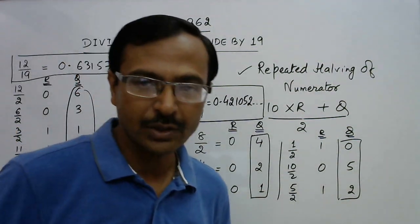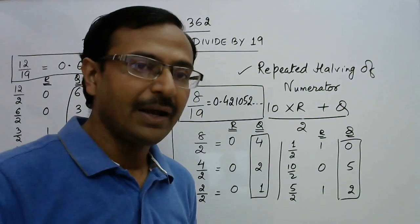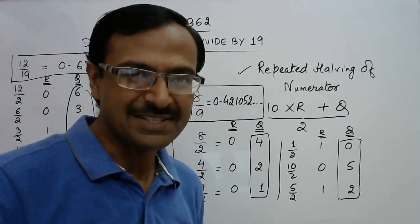So you see students, division by 19 can be as simple as that, and all the digits after the decimal place can be found out using this simple and amazing shortcut. So if you like it, share it and subscribe to the channel.